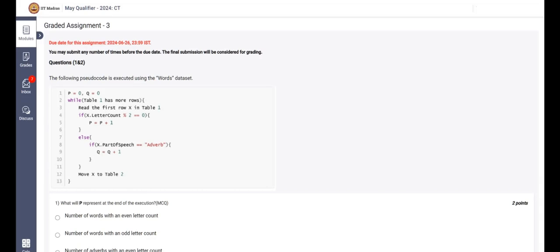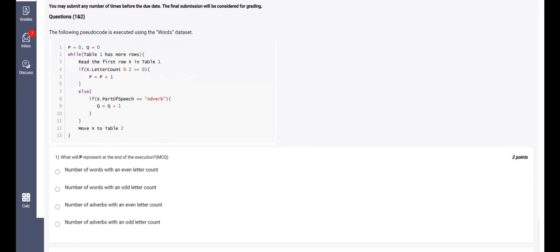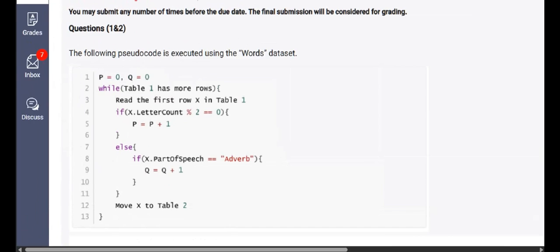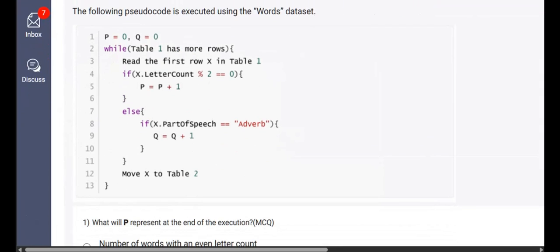Greetings, everybody. Welcome to the part one video of the graded assignment computational thinking week three. So let us start the graded assignment first question. Here we are given a question, let us see in depth what is given. The following pseudocode is executed using the words dataset.